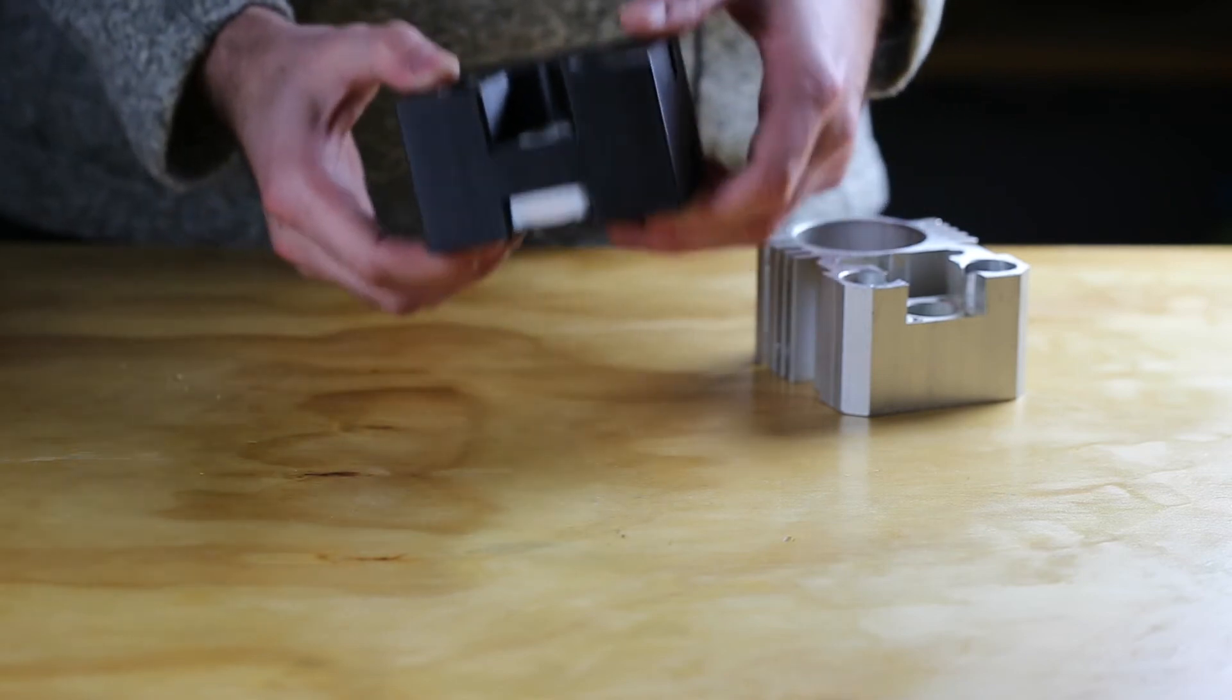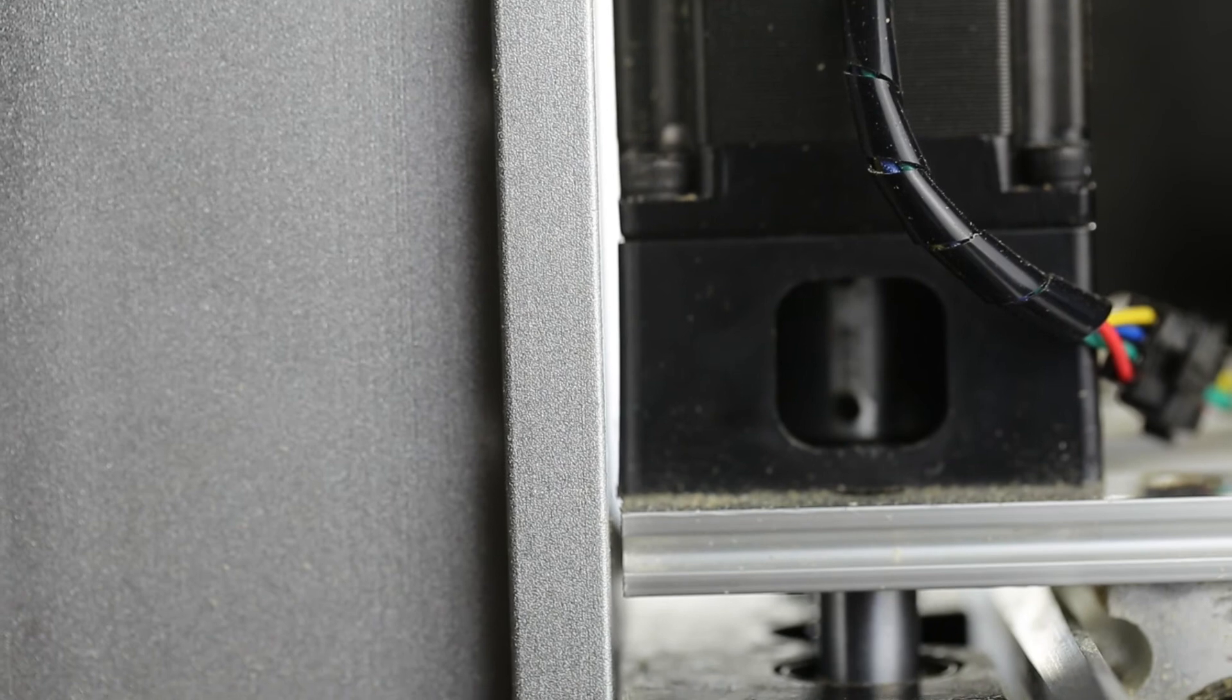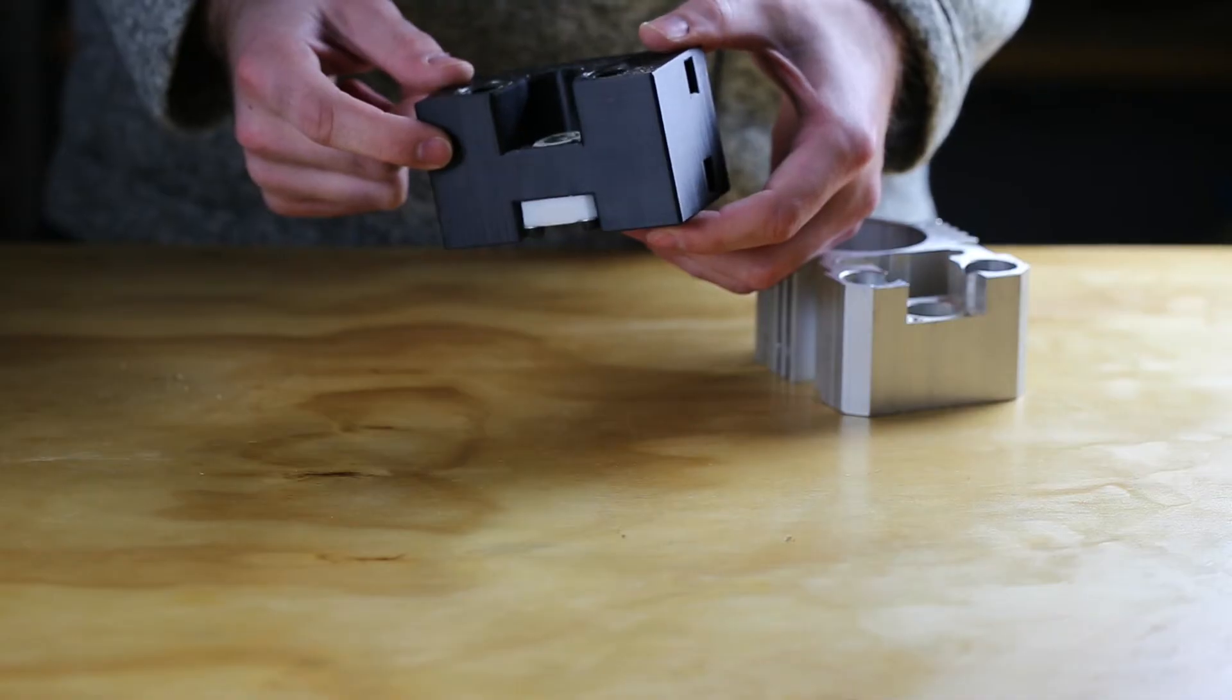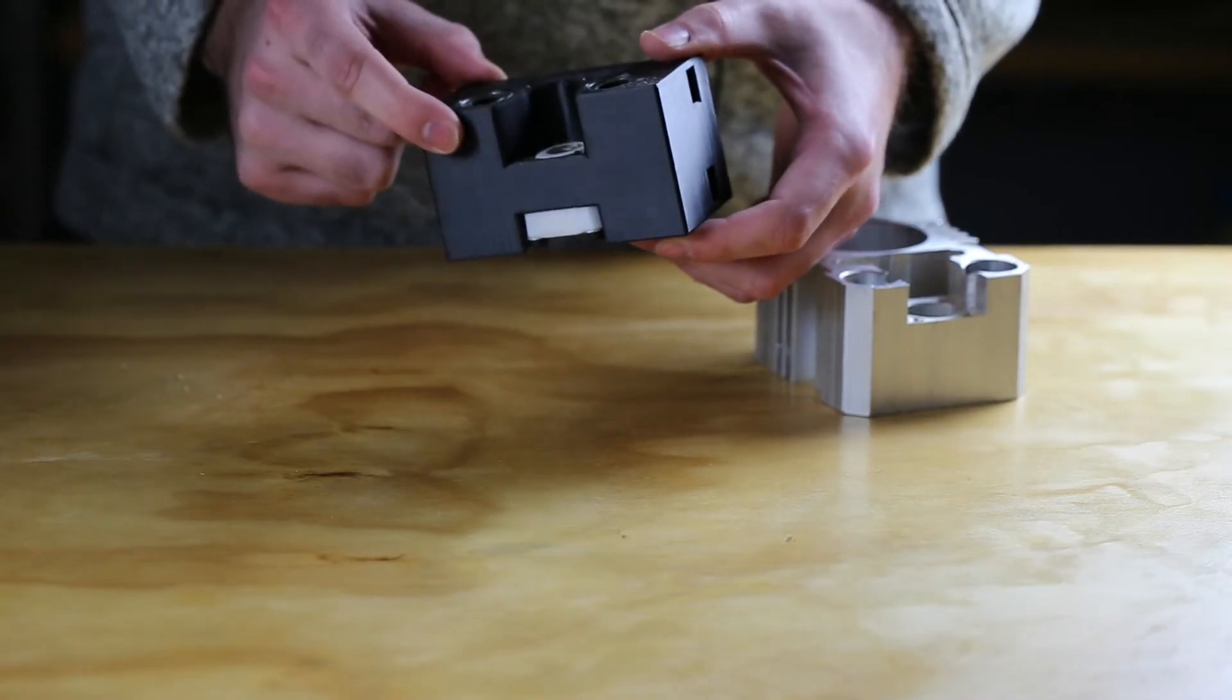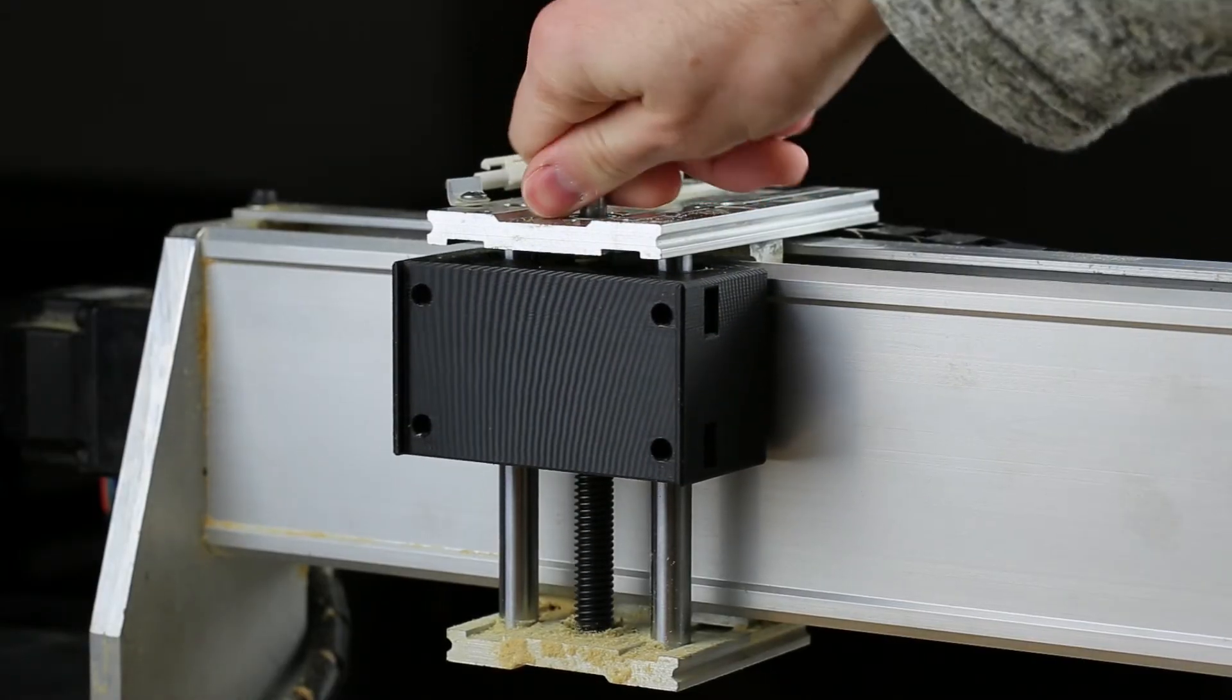The only major design changes I made were to reduce the clearance between the spindle and the X carriage and to move the T-nut to the bottom. I moved the T-nut in order to address an issue with it binding. When I got too close to either extent, it would get difficult to turn the threaded rod.